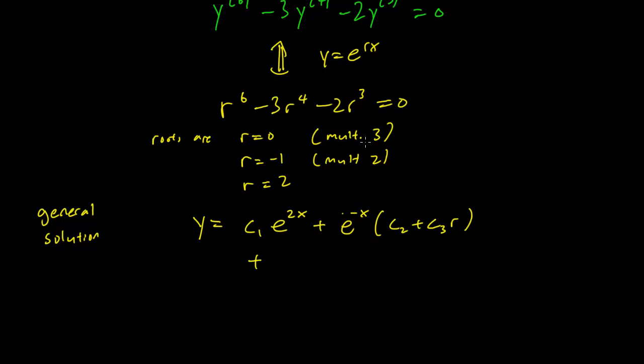root is going to be multiplicity 3 so that's e^(0x), that's just going to be a 1 so let's just write down it's just going to be a 1 and this has multiplicity 3 so we just have to put C4 plus C5x plus C6x^2 and again e^(0x) is 1 so we just cancel that out and this is going to be our general solution.